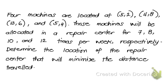Now for our example, four machines are located at (5,2), (4,8), (13,6), and (5,4). These machines will be allocated in a repair center for 7, 8, 10, and 12 times per week respectively. We want to determine the location of the repair center that will minimize the distance traveled.